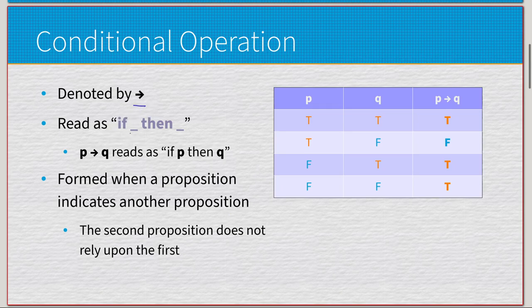They're denoted by an arrow pointing to the right, and you'll see them quite frequently. We read it in the current context as if blank then blank. Since we have P arrow Q, this is read as if P then Q.